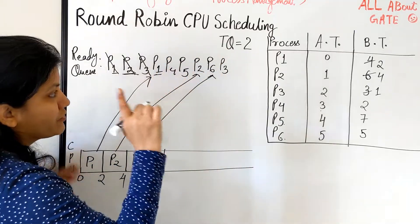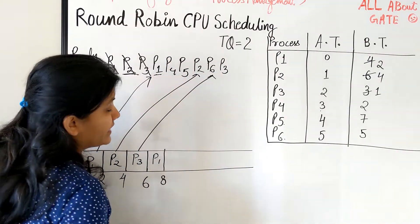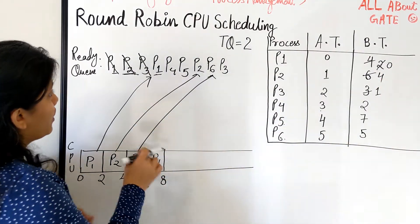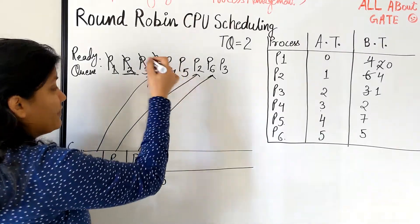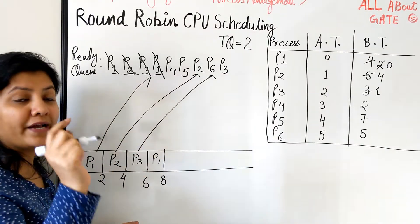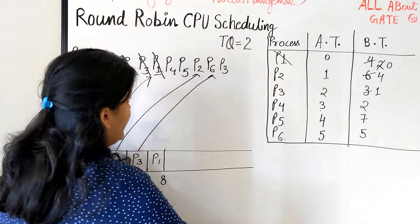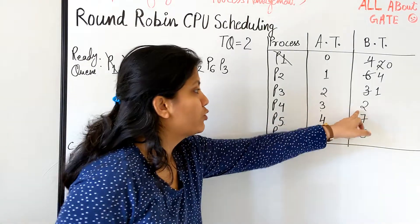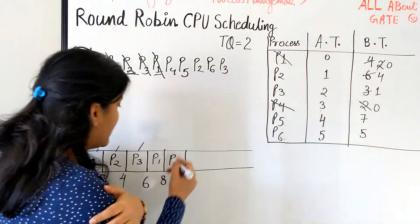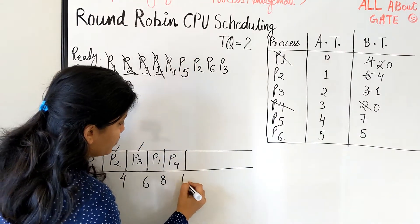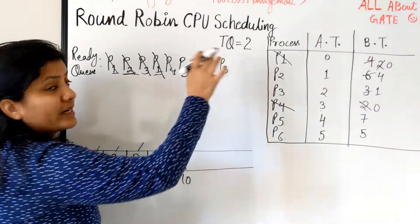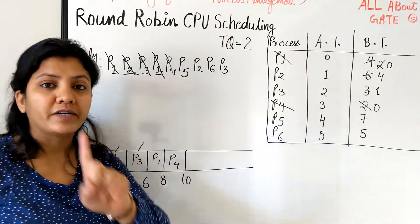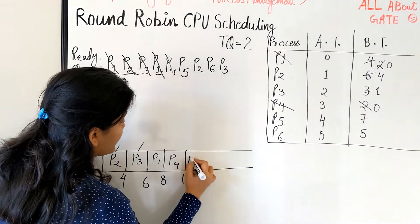Next to execute is P1. P1 needs just one more quantum — 6 plus 2 is 8 — and it becomes 0, so P1 is totally finished and gets struck off. Next is P4. P4 requires two burst units — 8 plus 2 is 10 — and it got terminated in its very first quantum, so it does not go back into the ready queue. The next process to execute is P5.